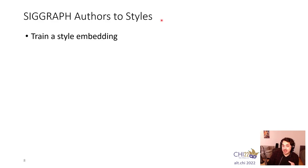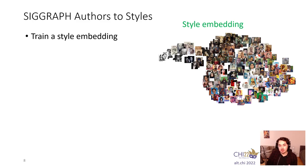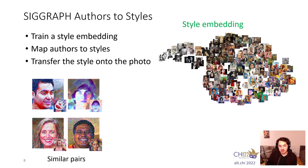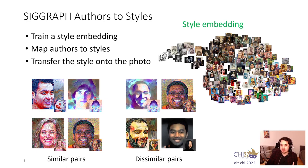If you're not okay with mapping to cats as your avatar, we can also style your avatar based on your research interest. For this, we do the authors-to-styles metaphor. We train a style embedding — skipping the ML details — and get a nice space where nearby images have similar styles. We map authors to style donor images, then transfer the artistic style onto your bio photo. For example, two pairs with similar research map to a similar style donor and get similar styles in their photographs, which you can immediately see. As a counter example, authors with very different styles have very different research interests.